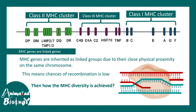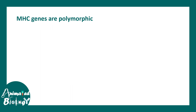Then the question is: how is MHC diversity achieved if recombination is not happening? MHC diversity is really important because in the world there are diverse sets of antigens that need to be presented to the immune system. MHC diversity does exist, and the answer lies in polymorphism — MHC genes are highly polymorphic.